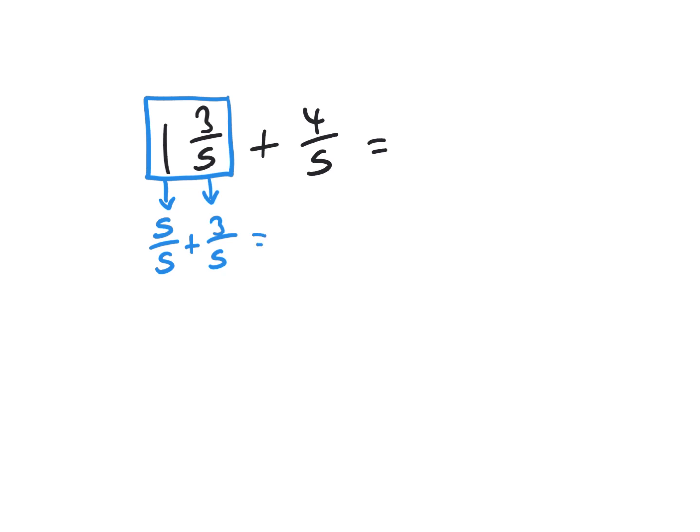So that gives us a total of 8 fifths. We're then going to take the 4 fifths and add that to it like the question's asking us to. And altogether we have 12 fifths just like we did in the previous example.